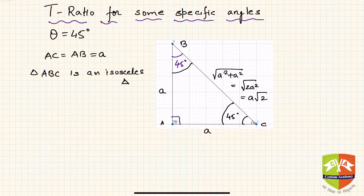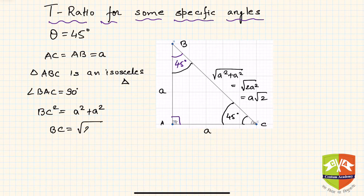Now since angle BAC is 90 degrees, we can apply Pythagoras theorem. Hence BC² = a² + a². So BC equals √(2a²) which is a√2. Since there is a square on a, I can pull it out of the square root sign, so it is a√2.